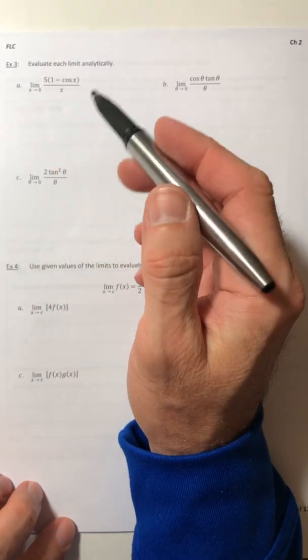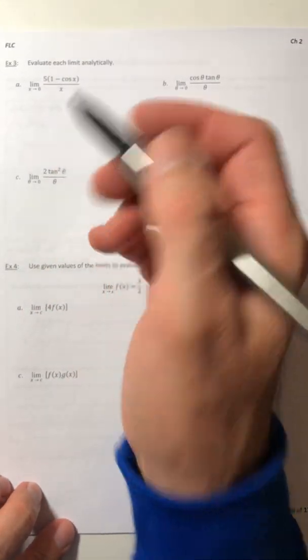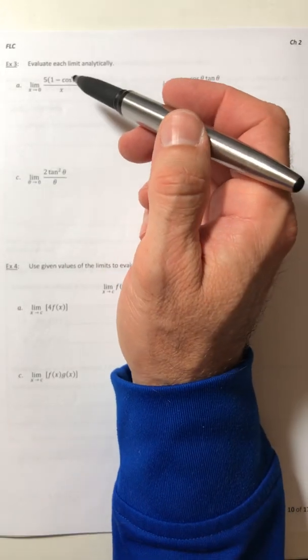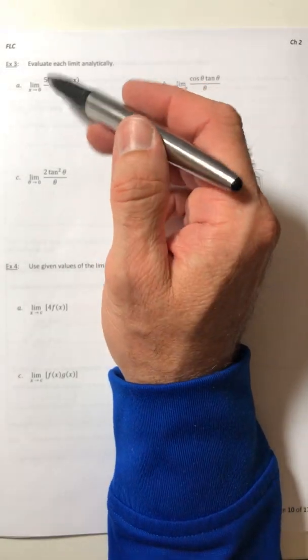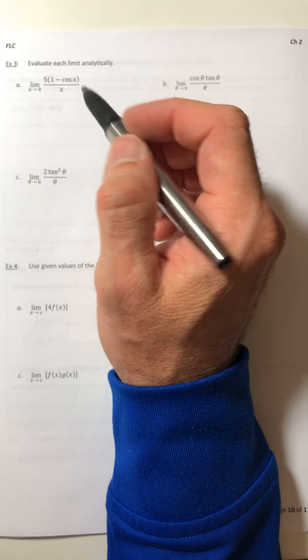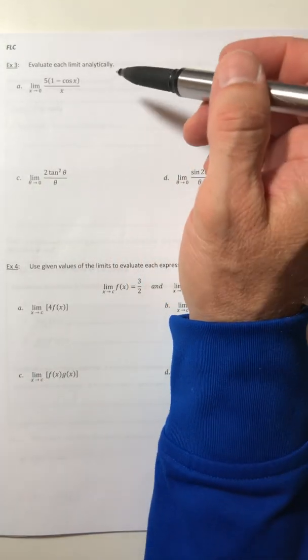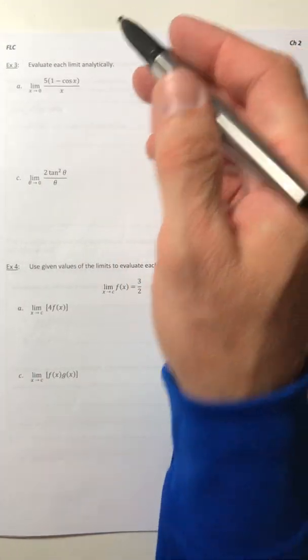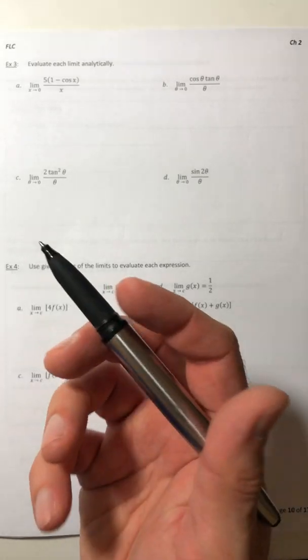Alright, here's going to be hopefully the last video for this section. So the last one we proved that the limit of sine of x over x was equal to 1. Then we looked at two other special limits. So it's mainly the first two that you're going to see in problems.